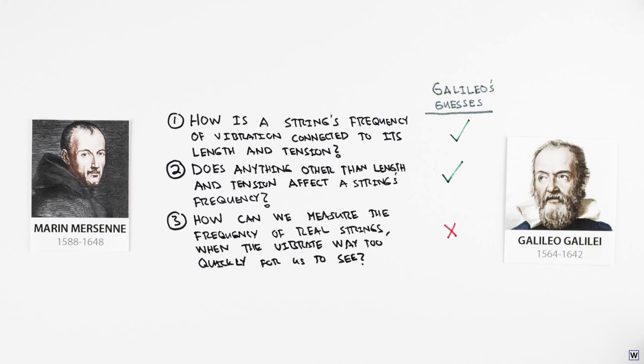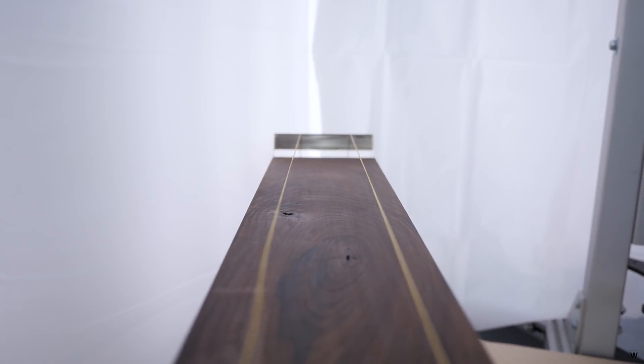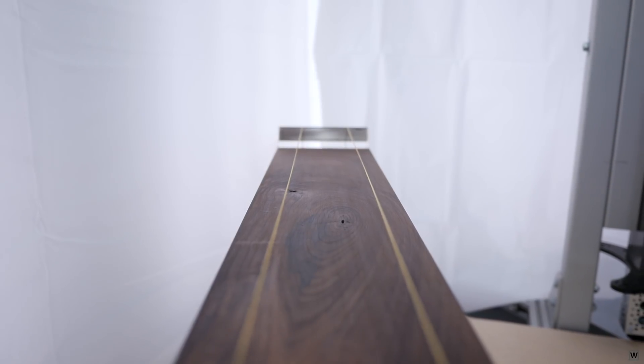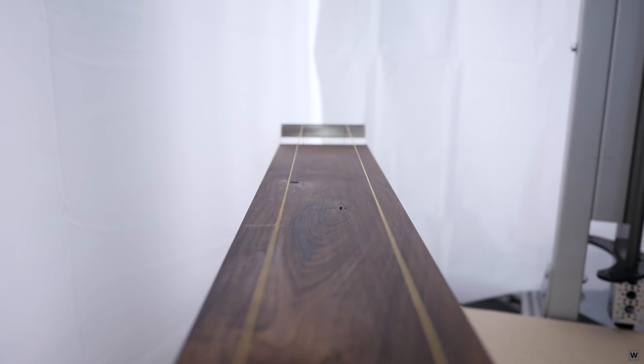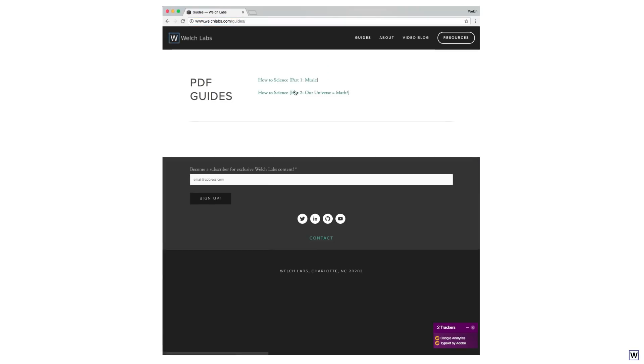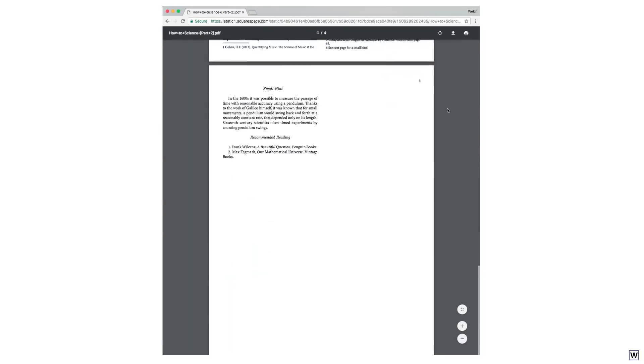So, how did Mersenne do what Galileo said was impossible? What do you think? Given the technology available in the early 1600s, how would you try to figure out how the rate of vibration of a string, its frequency, depends on its length and tension? How would you prove Galileo wrong? For a small hint and some other cool stuff, check out the PDF linked in the description below. Good luck, and thanks for watchin'.